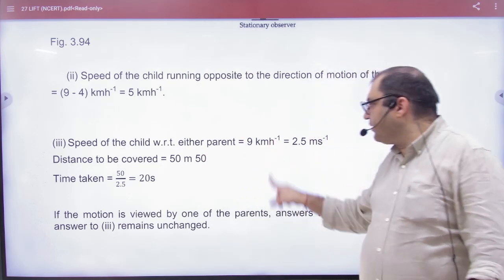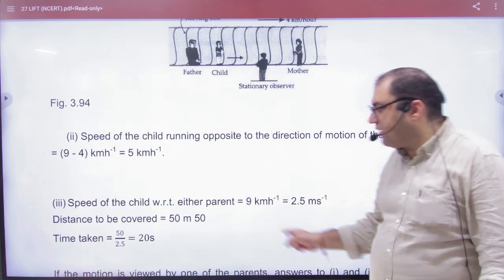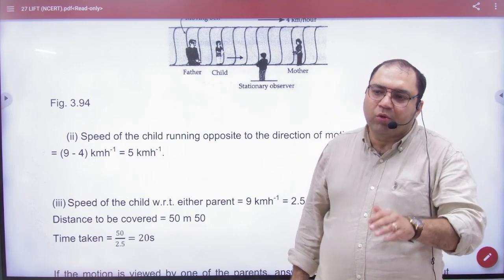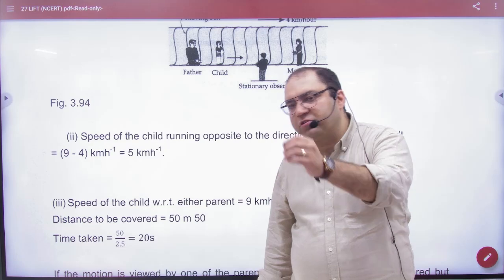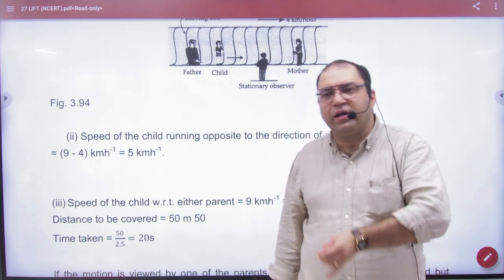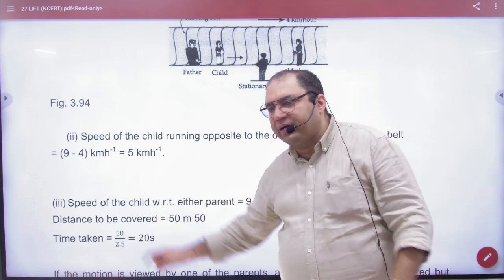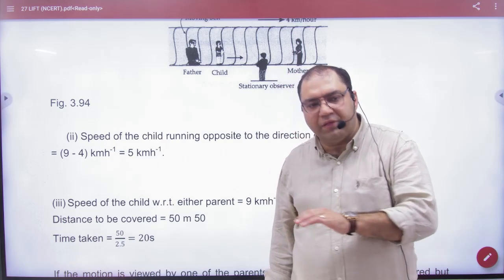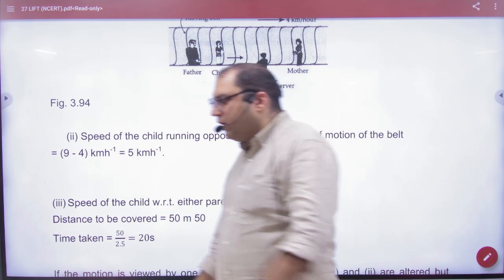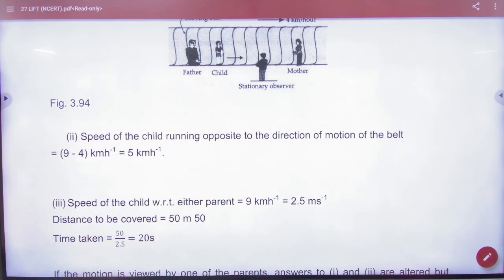You know that the distance between them is 50 meters. What do you want to take from the child's speed? Divide. No relative speed. No lift speed or belt speed. You don't need to take the belt speed, because with respect to each other, you have to take all these cases at rest.